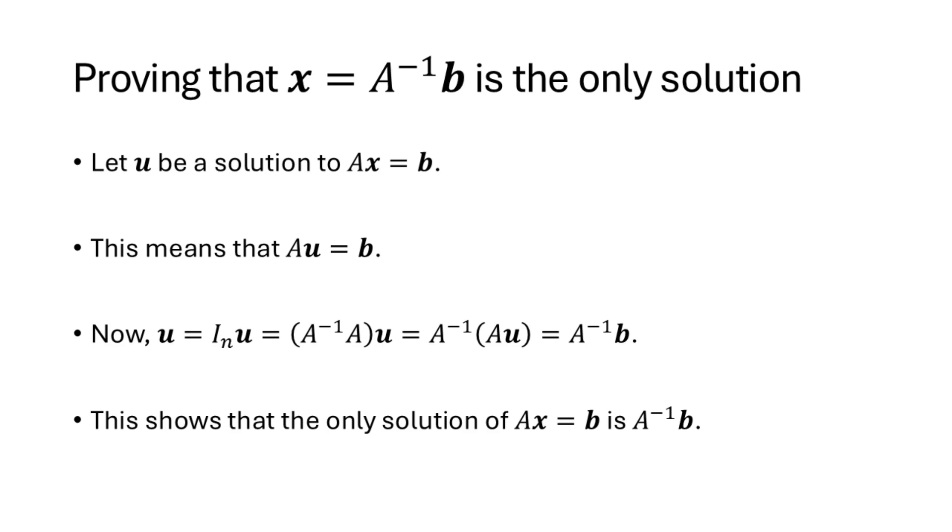Something to notice here is that in the two parts of this proof, we used both the fact that A times A inverse was equal to IN, and that A inverse A was equal to IN. So if our definition of inverse had only included one of those but not the other, then we might not have been able to prove this theorem.